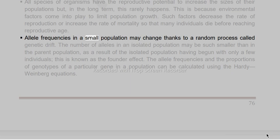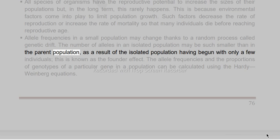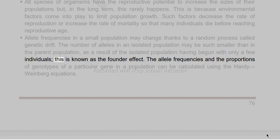Allele frequencies in a small population may change through a random process called genetic drift. The number of alleles in an isolated population may be much smaller than in the parent population as a result of the isolated population having begun with only a few individuals. This is known as the founder effect.